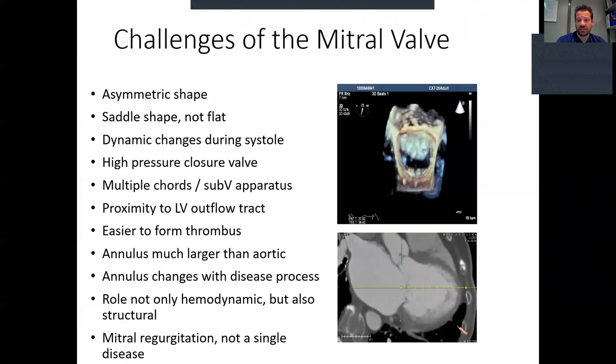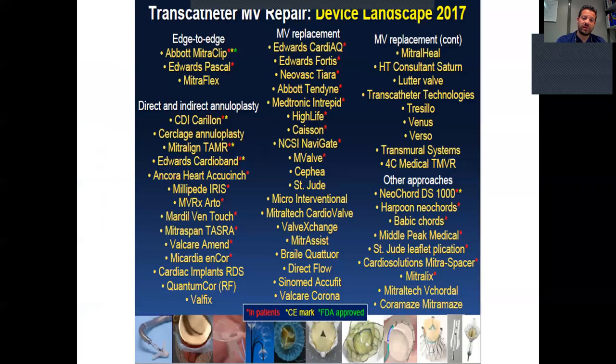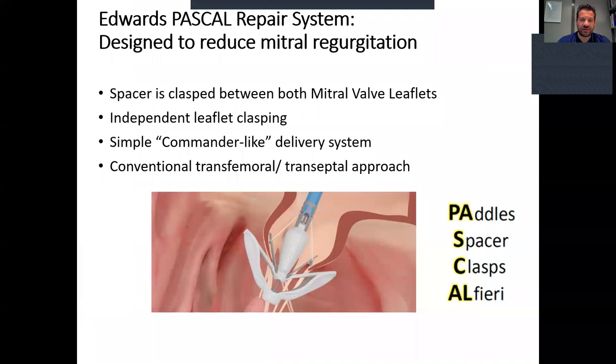MitraValve is a challenging valve — it is a dynamic valve, larger than the aortic valve. It's important to know that we have to account for its size and shape during systole. There are many transcatheter devices that target either leaflet repair, like MitraClip and Pascal, or the annulus with annuloplasty, like Carillon and Cardioband. And of course, we have valves for direct implantation and replacement of the MitraValve.